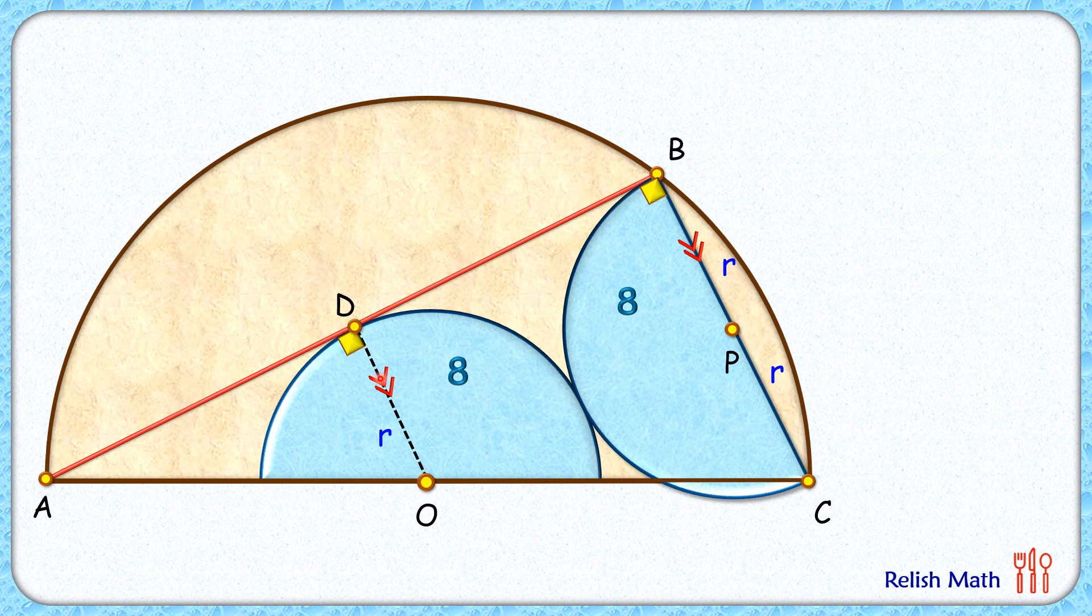Thus point D and point O are the midpoints of AB and AC. As O is the midpoint of AC, which is the diameter, thus OC is the radius. Let's assume this is capital R, and this point O is the center of both blue semicircle and brown semicircle.